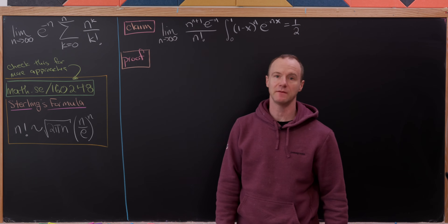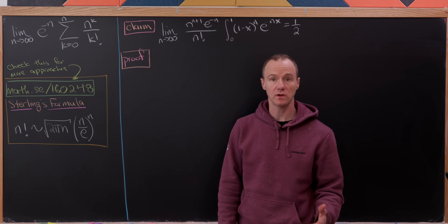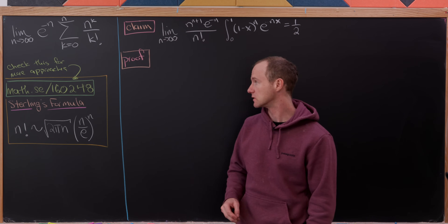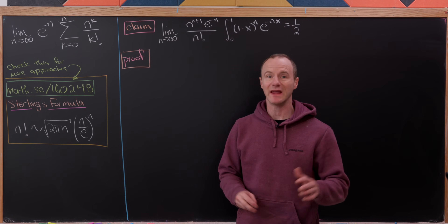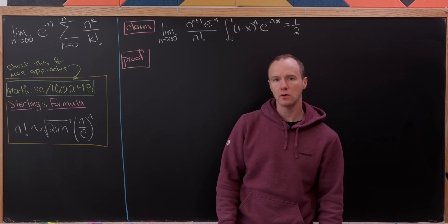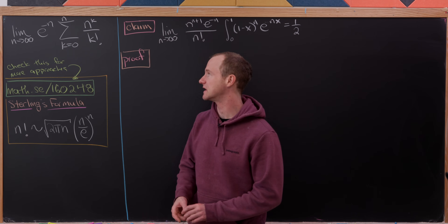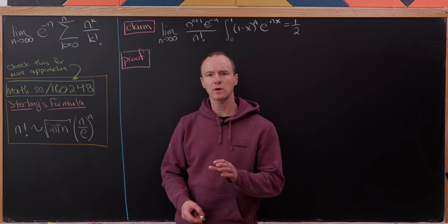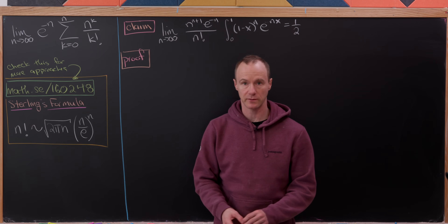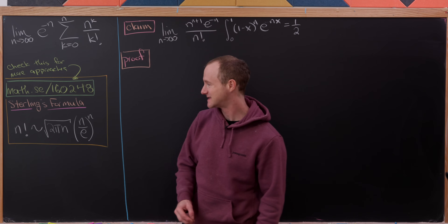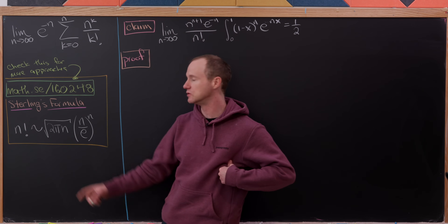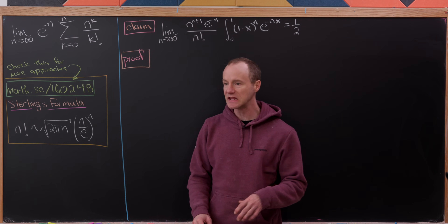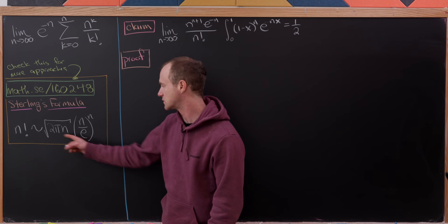Today I'd like to look at a nice, fairly complicated limit that I found on the Math Stack Exchange. The approach we'll use is fusing together approaches from some of the posts there. We want the limit as n goes to infinity of e to the minus n times the sum as k goes from 0 to n of n to the k over k factorial. A major tool we'll use is Stirling's formula, which says that n factorial grows asymptotically like the square root of 2π times n times (n/e)^n — so in any limit involving n factorial, you can replace it with this expression.